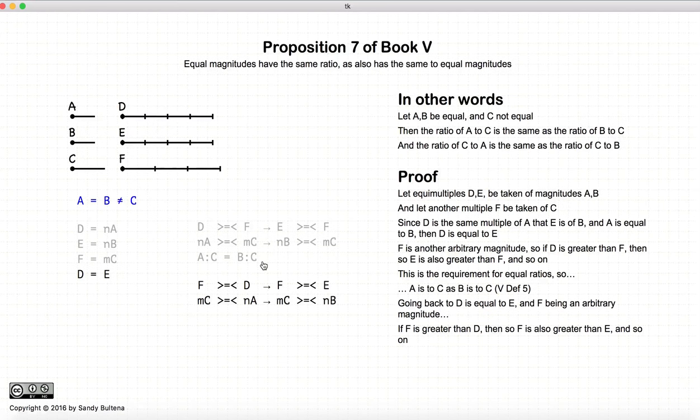Now we just flip things around. d and e are equal, so if f is greater than d, f is also greater than e. f equals d, f equals e, and so on and so forth.